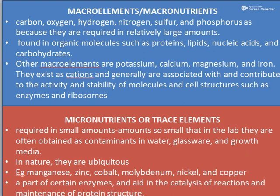Coming to the next type of nutrient, the micronutrient or trace element — they are required normally in small amounts. Normally when you wash a glassware or from the water you take, or from the growth media, that is sufficient enough. You get them in small quantities from all these things, so you need not add these trace elements usually. Even in the water they would be present. And if you are growing microbes in a lab, they get it from the water, from the glassware, and from the growth media. In nature, these trace elements are found to be ubiquitous — present everywhere.